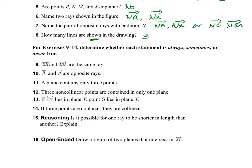Now we are going to answer with always, sometimes, or never. Ray GH and ray HG — are they the same ray? This is never. Why? Because the direction of the ray is given by the order of the letters. Ray GH means the endpoint is G, extending toward H. Ray HG starts at H and extends toward G. So it's not the same ray.